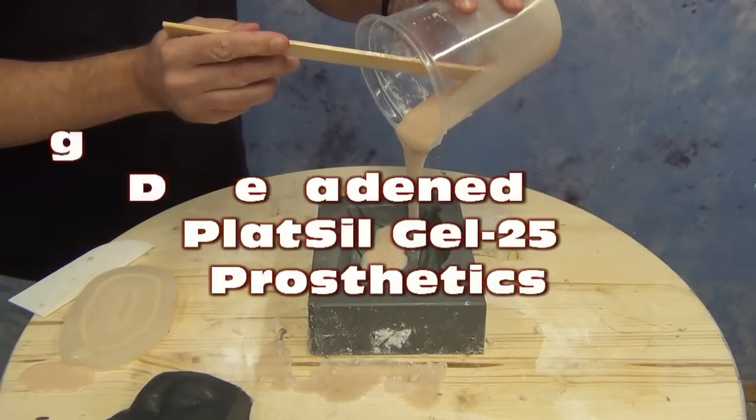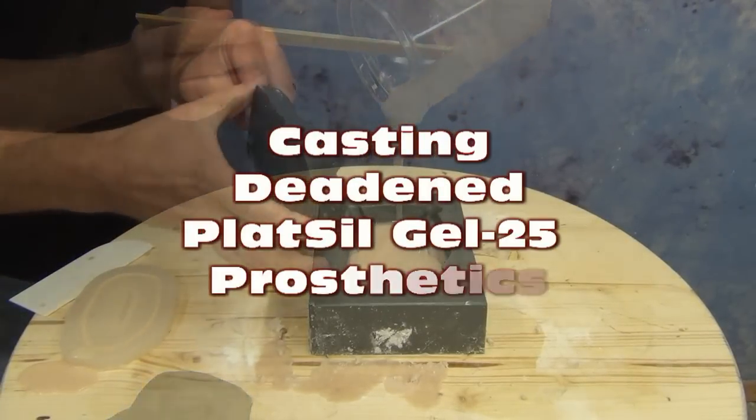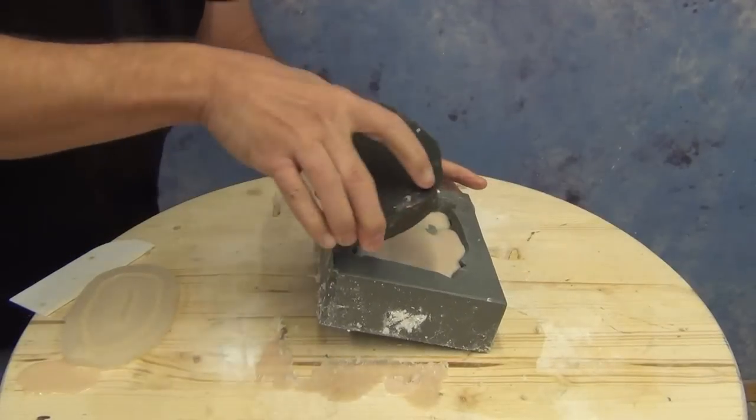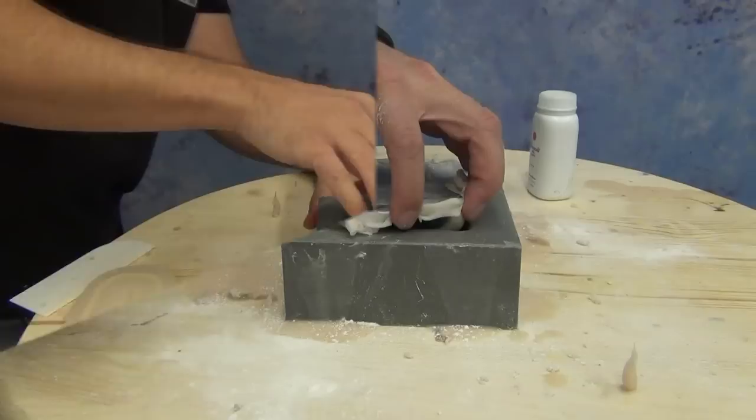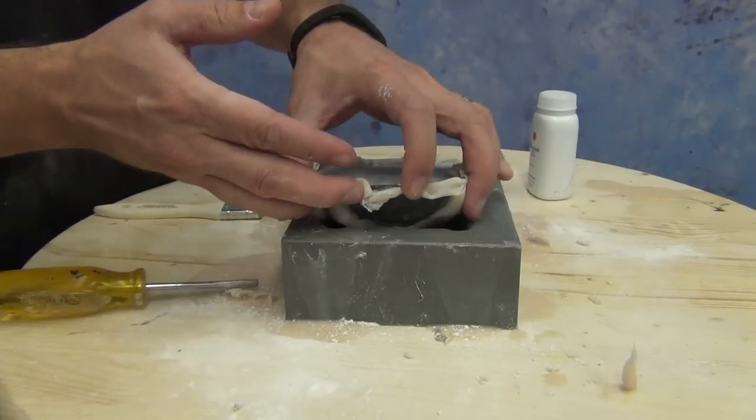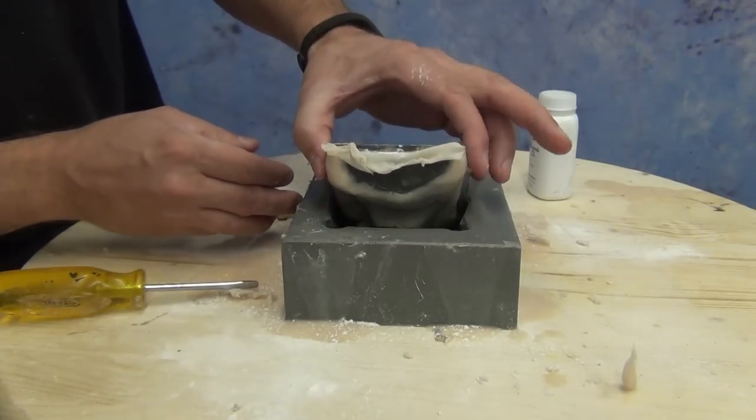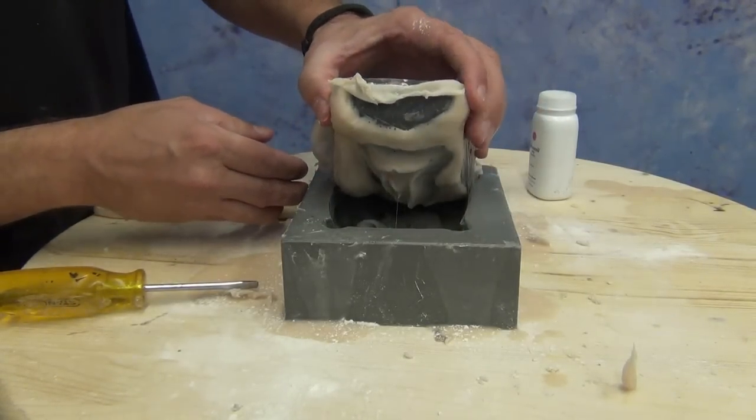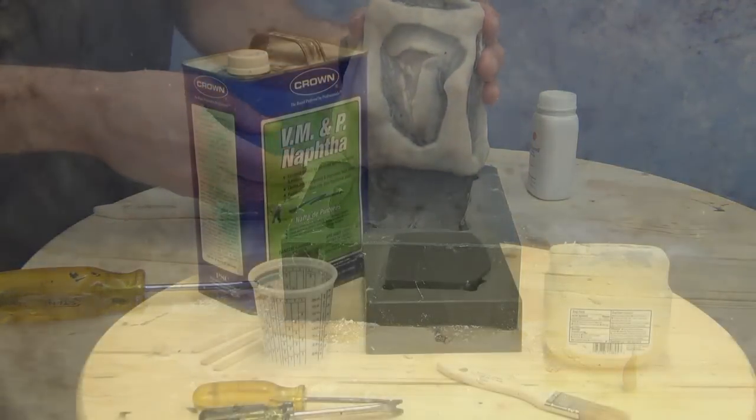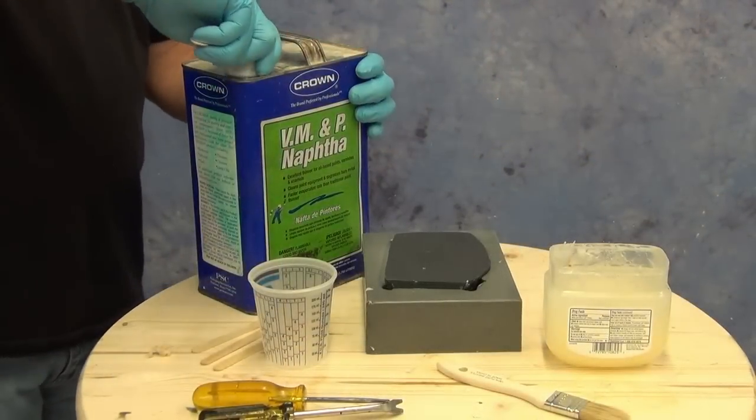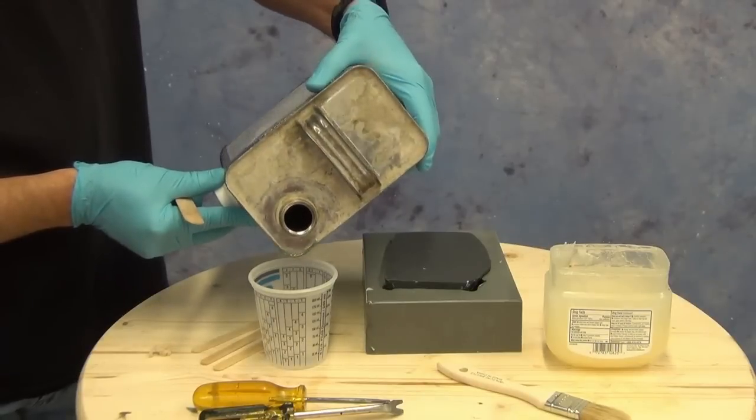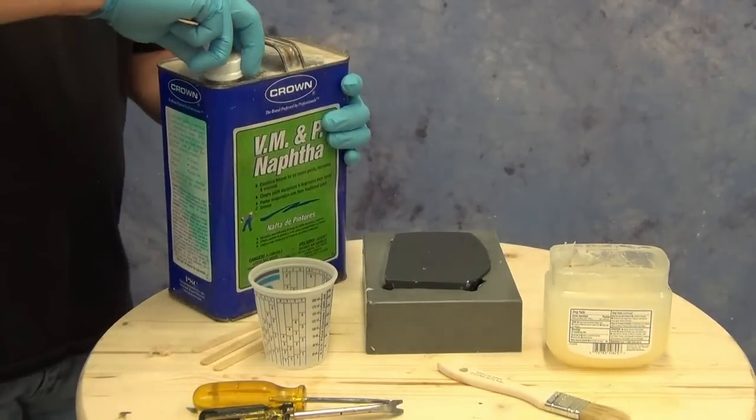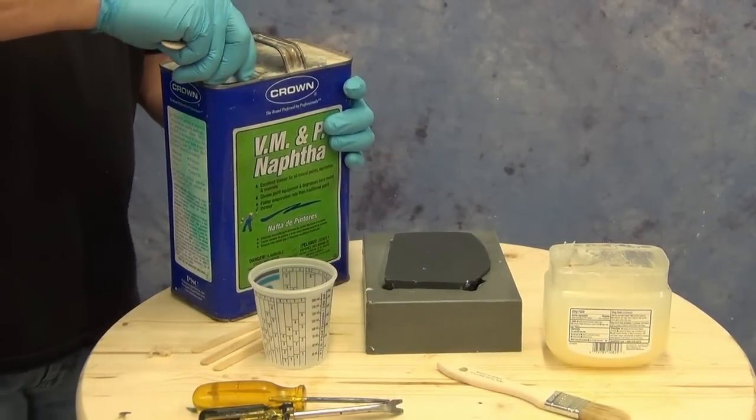Today's tutorial on casting Deadened Plat Sil Gel 25 prosthetics into a 1630 resin mold follows up on the previous two videos where we showed how to create a corrected core and make a negative prosthetic mold. In this video, we'll demonstrate how to cast Deadened Plat Sil Gel 25 to create an encapsulated silicone prosthetic.